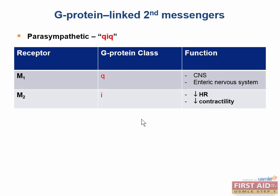The M2 receptor is of the G-sub-I class, and its most important role is as an inhibitory receptor found in the nodal tissue of the heart. It decreases heart rate and decreases contractility of the atria, which is why atropine — an inhibitor of the M2 receptor — can be given to treat bradycardia. Notice how the M2 receptor acts in opposition to the beta-1 receptor: beta-1 increased heart rate and contractility, while M2 decreases both.